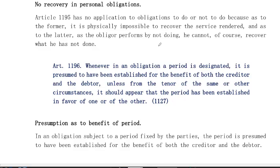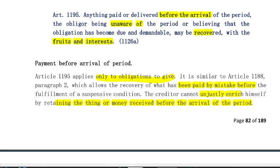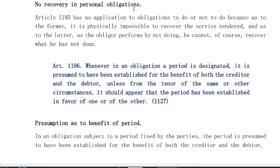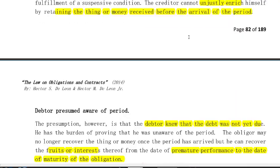Take note that Article 1195 is applicable only in obligations to give — which is a real obligation. There is no recovery when it comes to personal obligations. Obligations to do and not to do have no application for this recovery provision. Because it is physically impossible to recover the service that has been rendered — as the obligor performs by not doing, he cannot recover what he has not done. So that covers Articles 1194 and 1195.